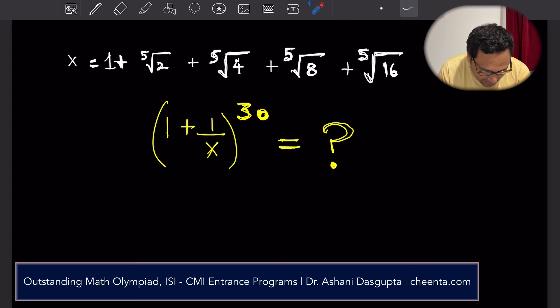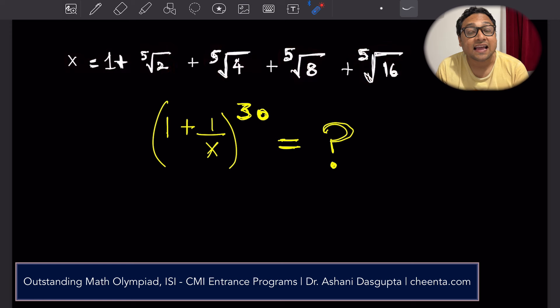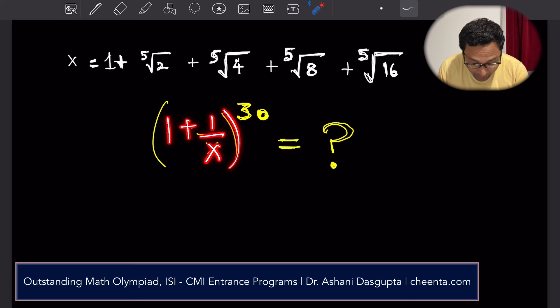The problem says that there is a number x which is equal to 1 plus 5th root of 2, 5th root of 4, 5th root of 8, 5th root of 16, all of these things added together and we want to find out the value of 1 plus 1 over x raised to the power 30.